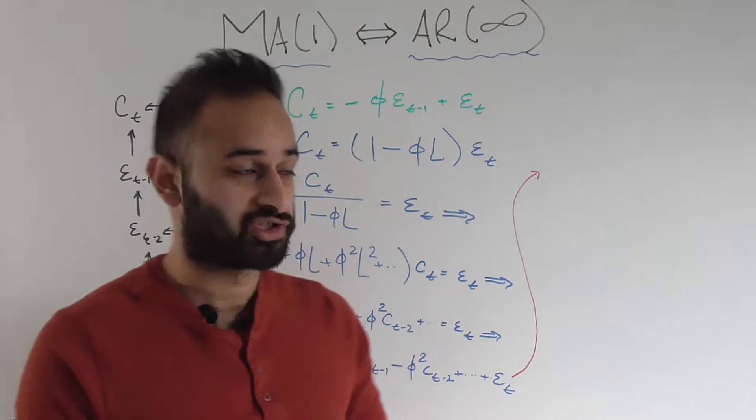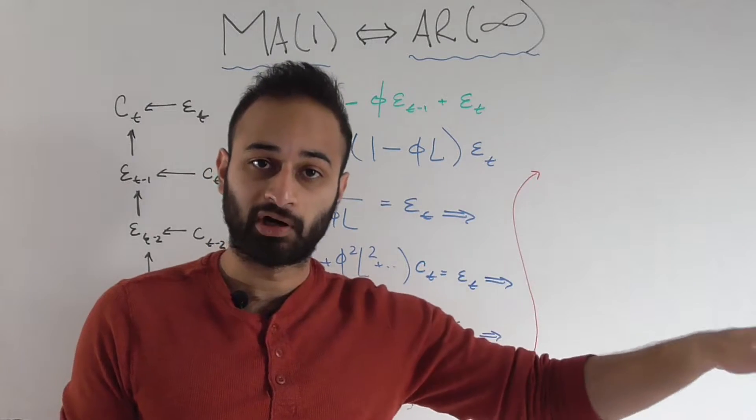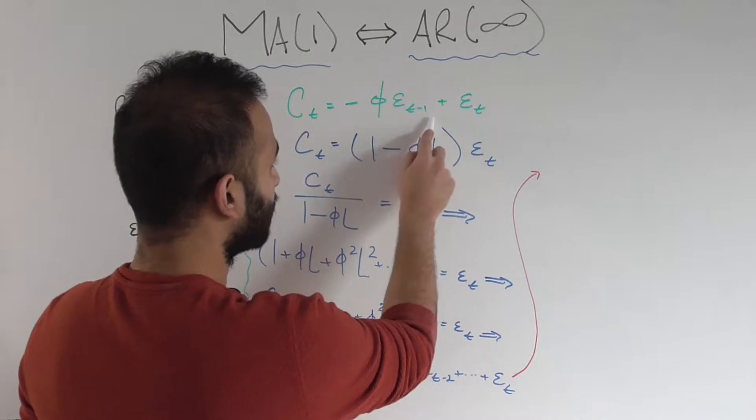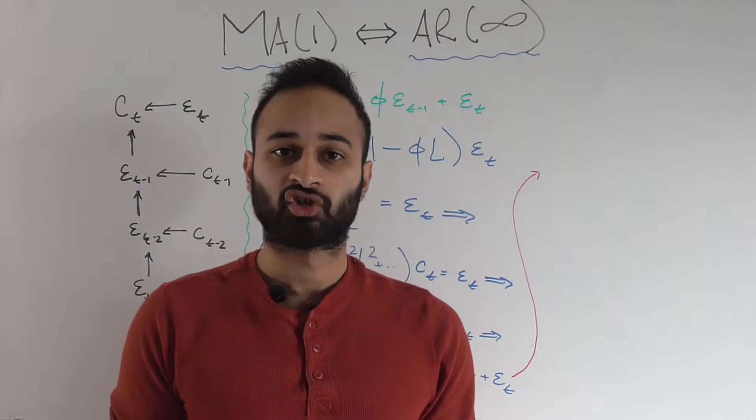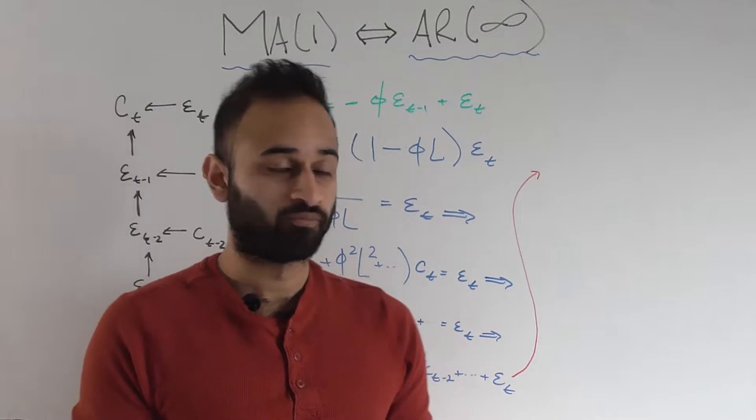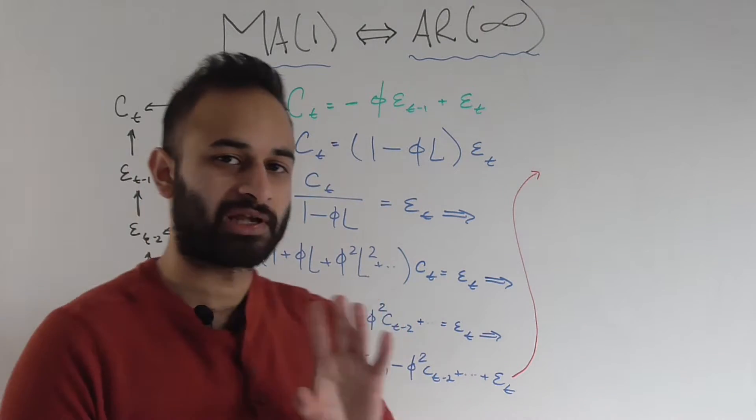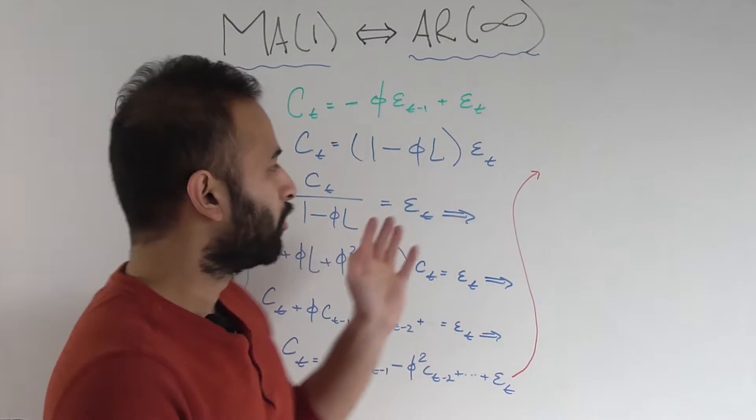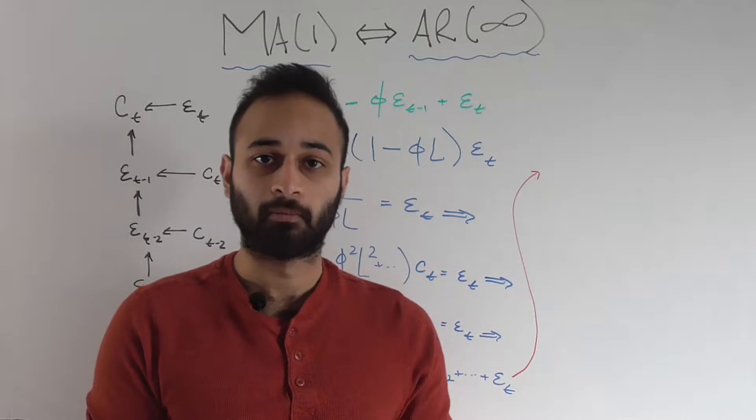Remember, an MA1 model is just saying that it's going to be a function of the random error or innovation from one period ago, which is epsilon t minus 1, and then it's also a function of the random error or innovation today, which is unobserved, which is epsilon sub t. I put a negative sign here just so the math works out a little bit easier. But the point is that this phi is the coefficient of the random error or innovation from one period ago.